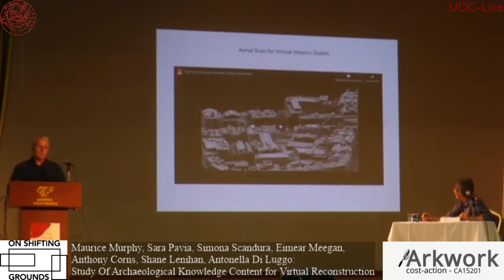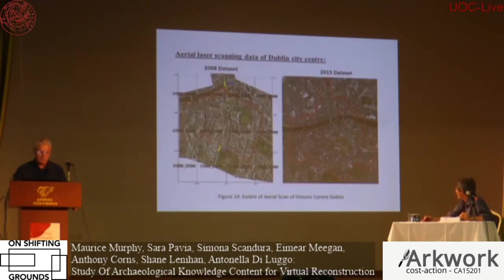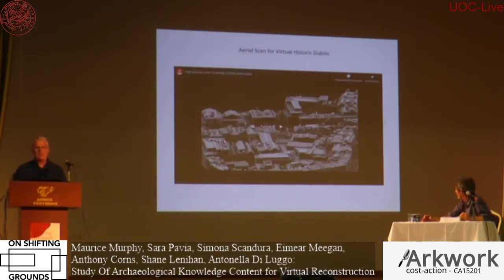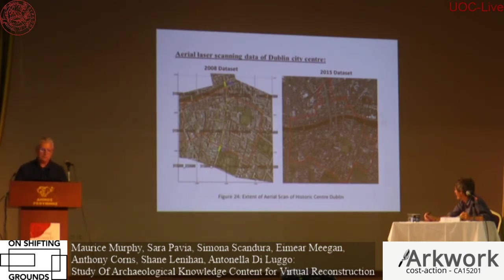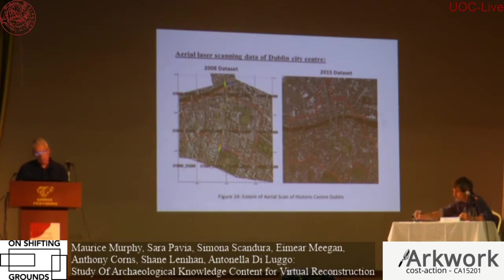A video is shown of some of the data from the point cloud of the city. The 2008 dataset and the 2015 dataset are compared, showing the extent of the aerial survey — a combination of photographs and scanning from planes and helicopters, concentrating on capturing building facades rather than roofs.